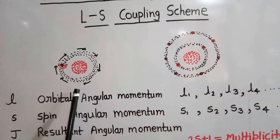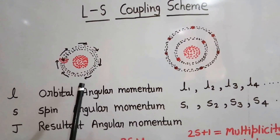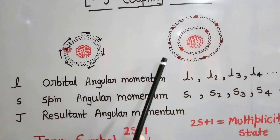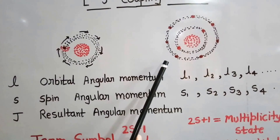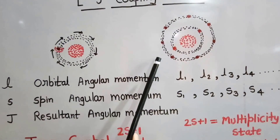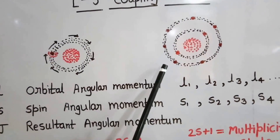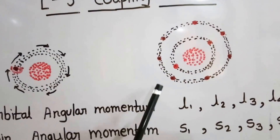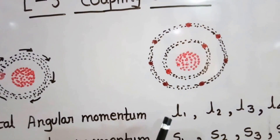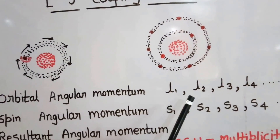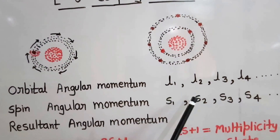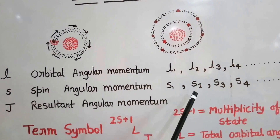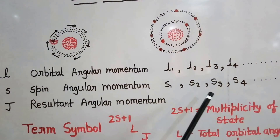This is the case of one electron. But when there are more than one electrons — in the case of a multi-electron system — there will be many electrons and each electron will have orbital angular momentum and spin angular momentum. These are shown by L1, L2, L3, L4, and the spin angular momenta are shown by S1, S2, S3, S4 and so on.